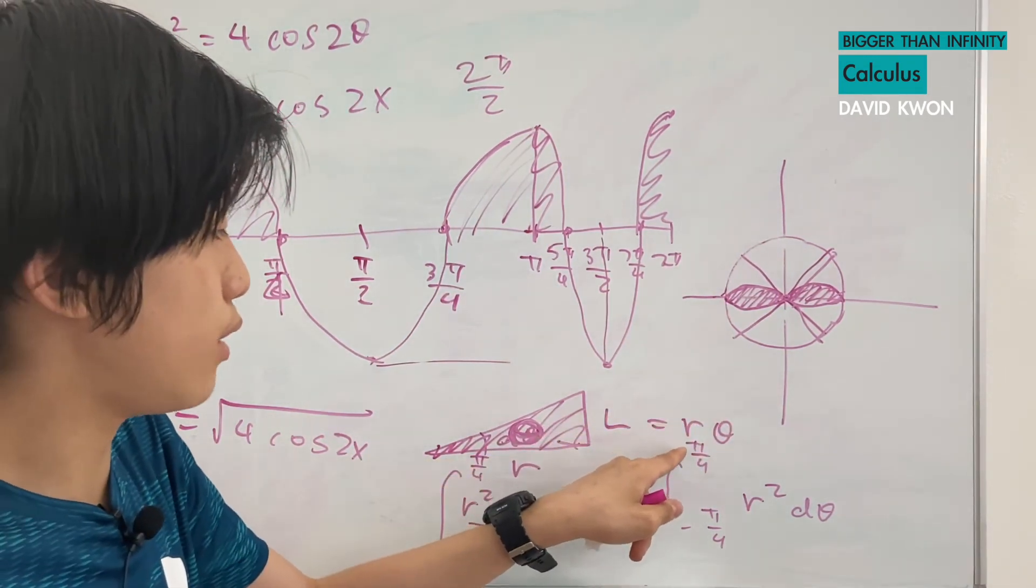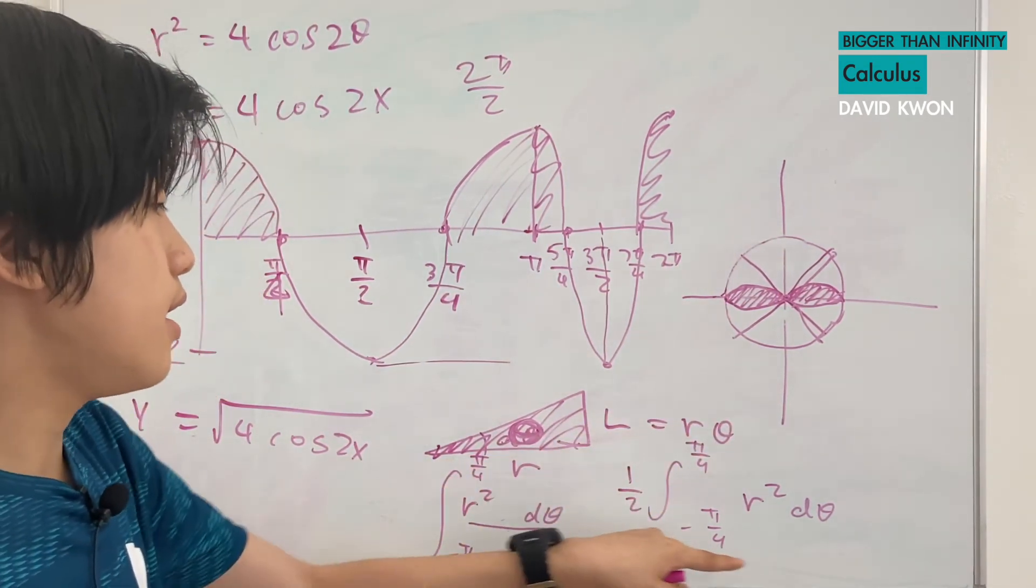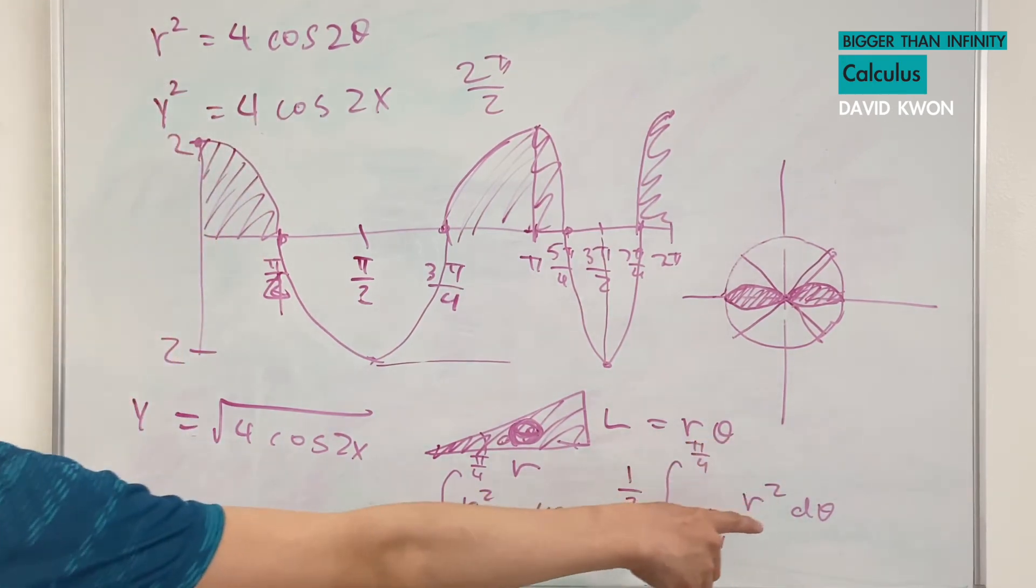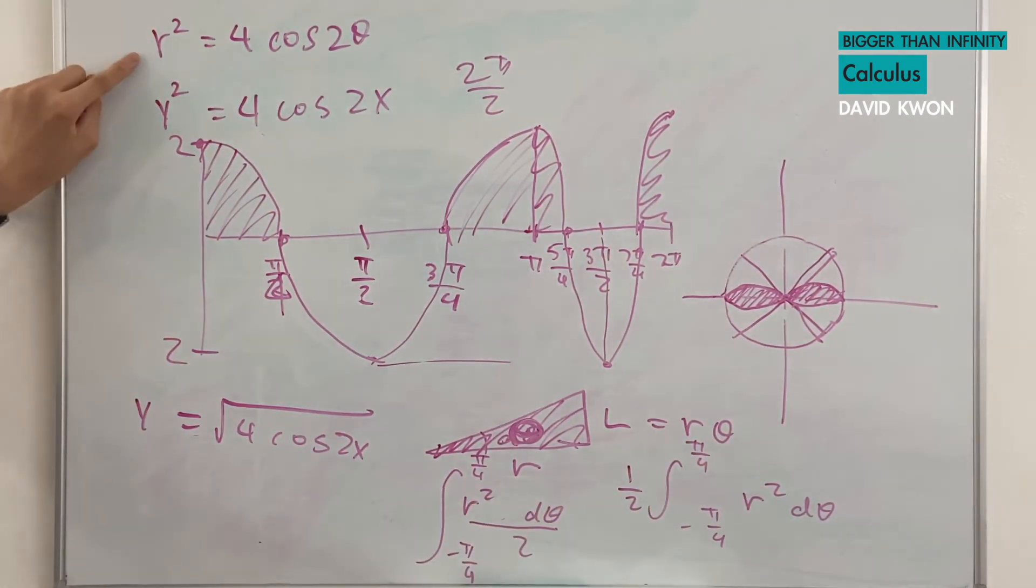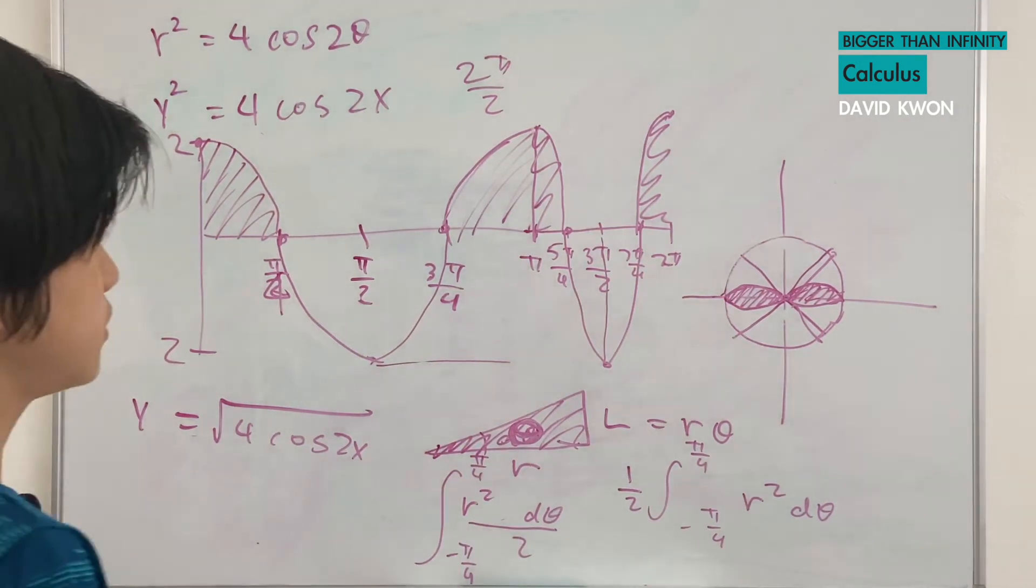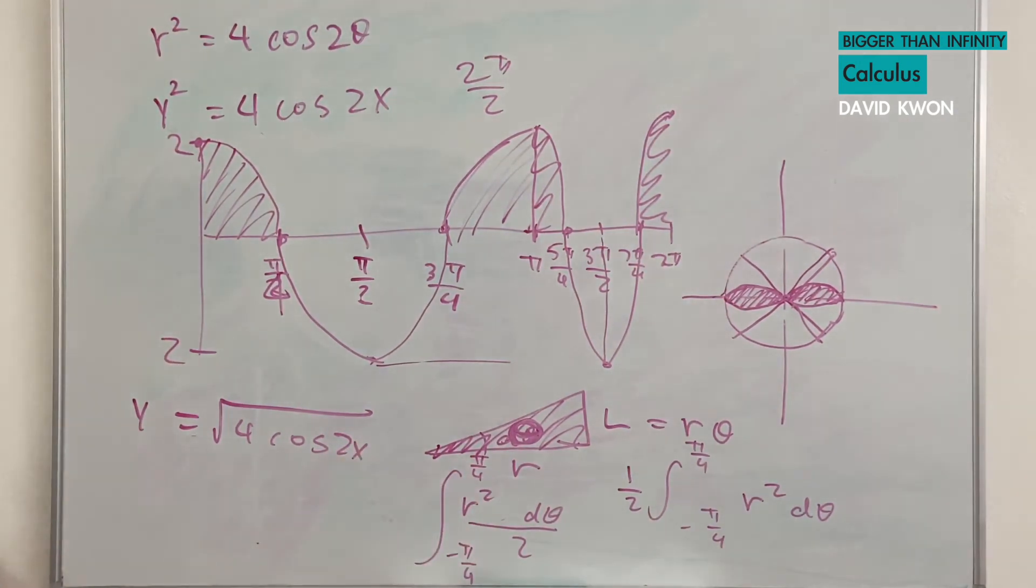Yeah. So, we get π over 4 to negative π over 4. And now, let's solve this. But before we do that, we need to find the value of r, which is just right here. So, let's solve this in another space.